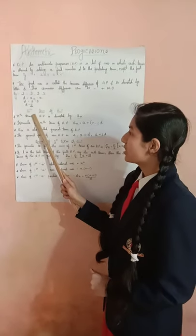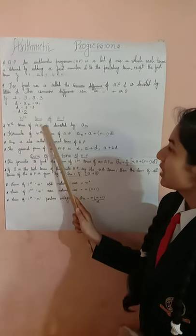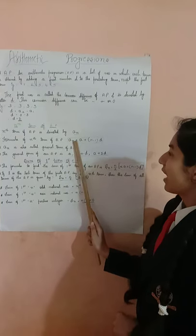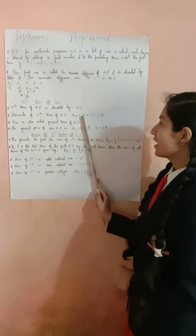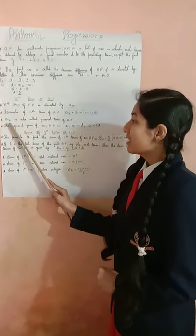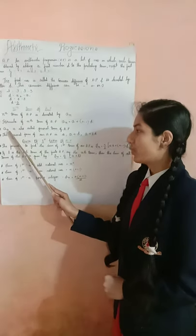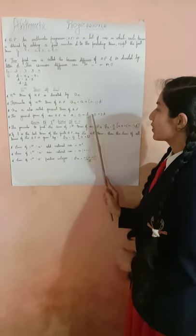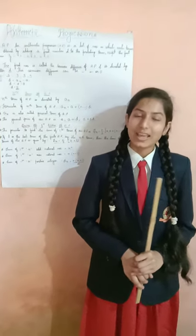Next, let's proceed and know something about the nth term of AP. The nth term of AP is denoted by AN. The formula for the nth term of AP is: AN equals A plus (n minus 1) into D, where AN is the nth term, A is the first term of AP, N is the number of terms, and D is the common difference. AN is also called the general term of AP — this is a very important point. The general form of an AP is A, A plus D, A plus 2D, and so on.